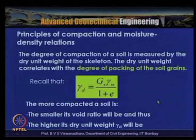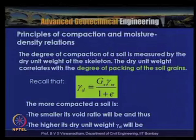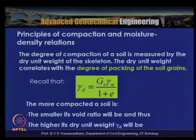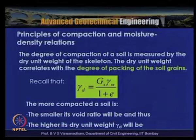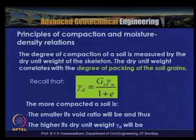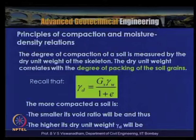The degree of compaction is measured by the dry unit weight of the soil skeleton. Dry unit weight correlates the degree of packing of soil grains: γ_d = Gs·γ_w / (1 + e). The more compacted the soil, the smaller the void ratio and the higher the dry unit weight.